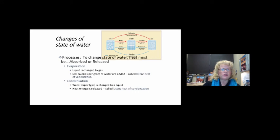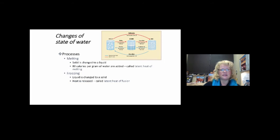To change the state of water, heat must be absorbed or released. Liquid is changed to gas during evaporation, and during condensation, vapor is changed into liquid. 600 calories per gram of water are added during vaporization, called latent heat of vaporization. Condensation turns it back into a liquid, called latent heat of condensation. Remember, latent heat of condensation is important hidden heat for things like hurricanes.